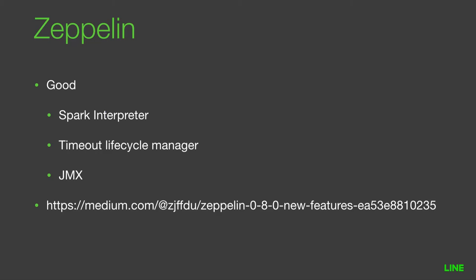The last part is about Zeppelin. Recently, Zeppelin has been preparing for the 0.8 release for a while — we've made RC5, but it's still in progress. There are many improvements; I will cover three in this talk, and you can see the full list of improvements at the provided link. First, Zeppelin has a brand new Spark interpreter and now officially supports YARN cluster mode. Second, a Lifecycle Manager was introduced — the Timeout Lifecycle Manager is the first implementation to handle interpreter lifecycle. Finally, Zeppelin also started supporting JMX.